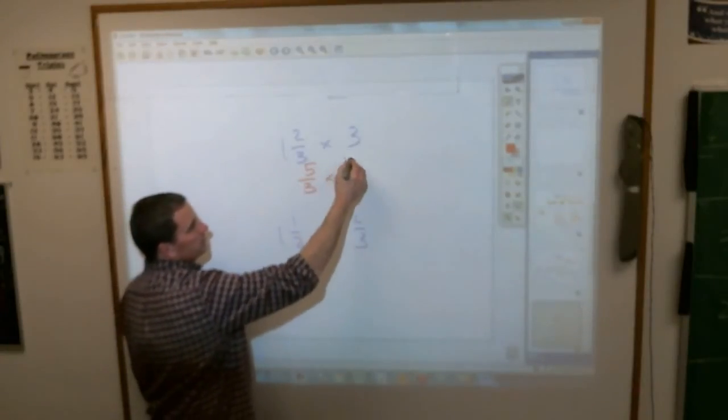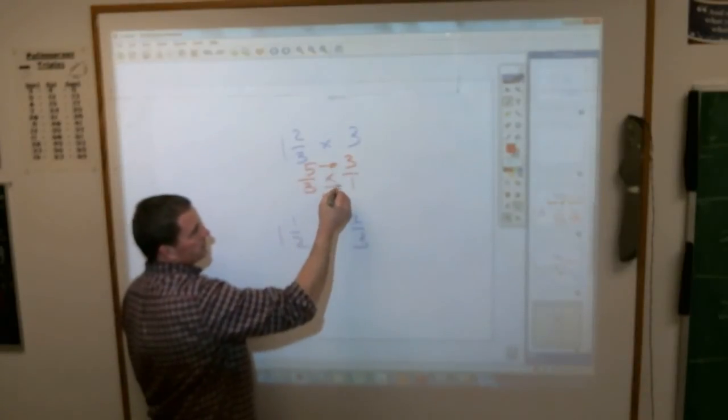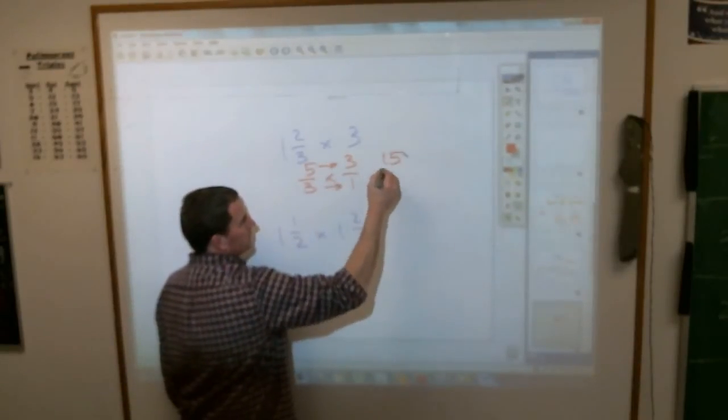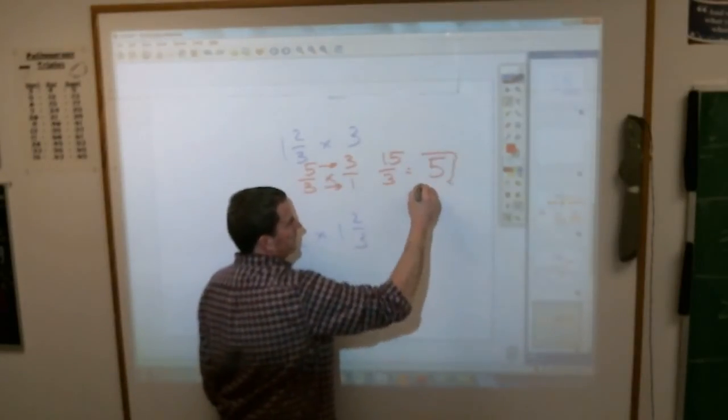How do you make 3 improper? You put it over 1. You multiply across, which is 15/3. You simplify—3 goes into 15 five times.